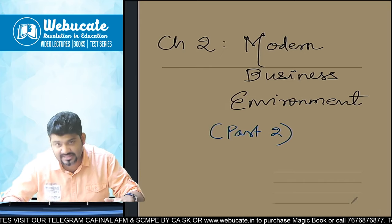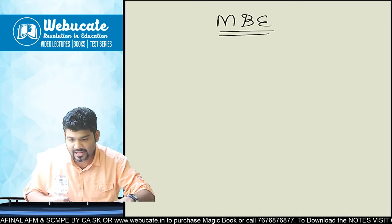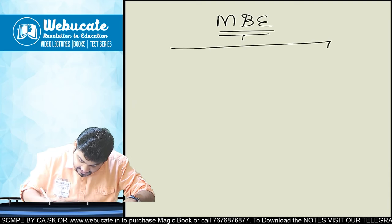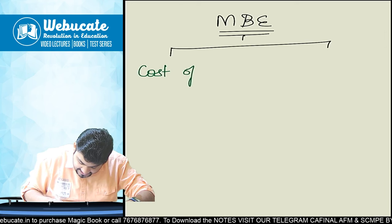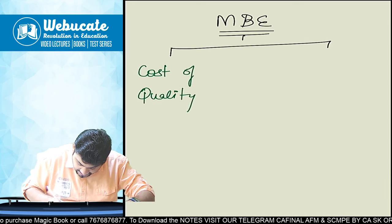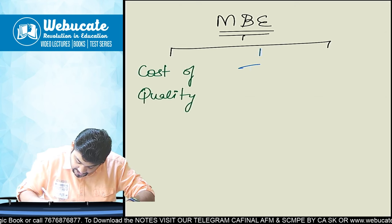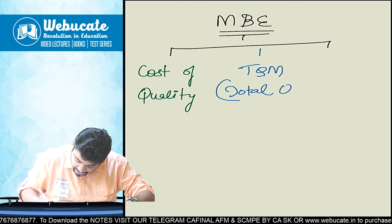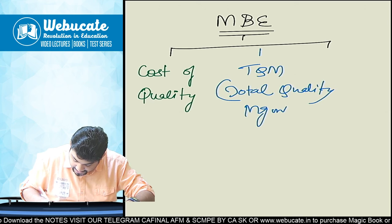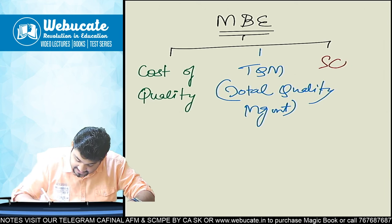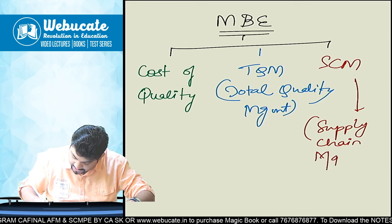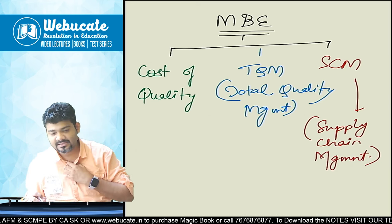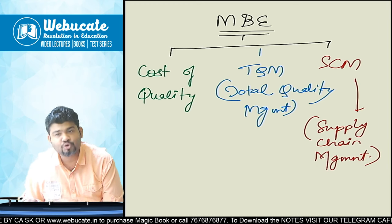Modern business environment is what we started with last time. It is divided into three parts for concept terms: first is cost of quality, which we did yesterday; second is TQM — total quality management — which we are going to focus on today; and the third part is SCM, which is called as supply chain management.